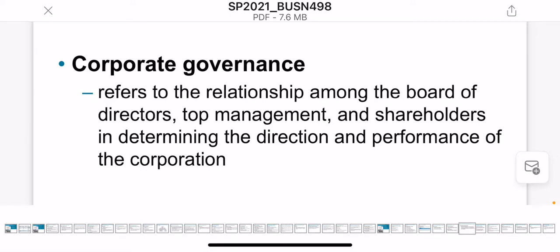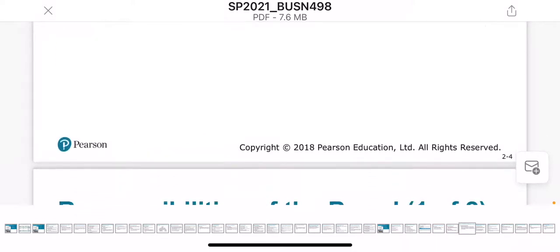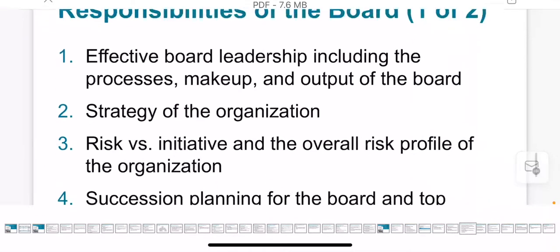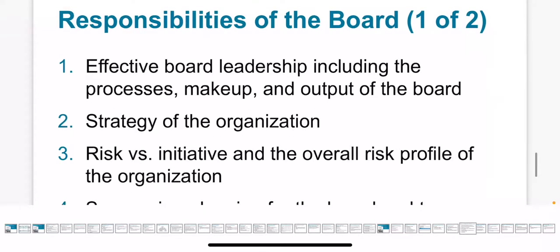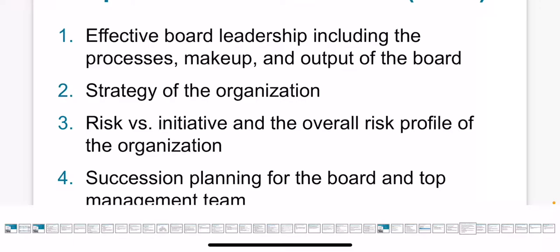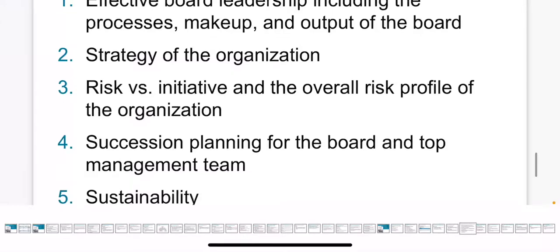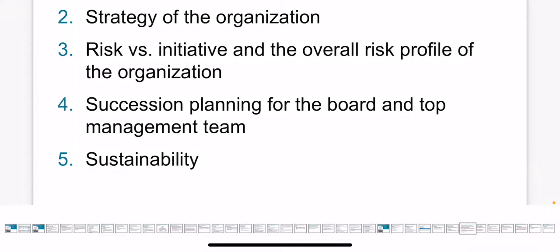We should understand the meaning of corporate governance. Corporate governance is the relationship between the board of directors, top management, and shareholders. The responsibilities of the board of directors are basically to guide or lead the organization to be successful in terms of process, input, and output. They are also involved in the strategy.